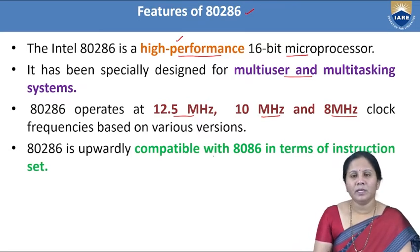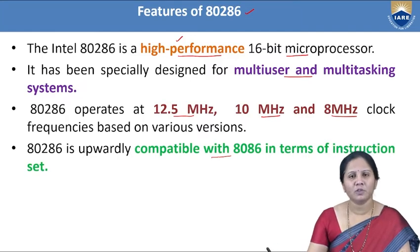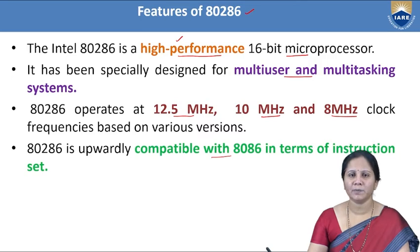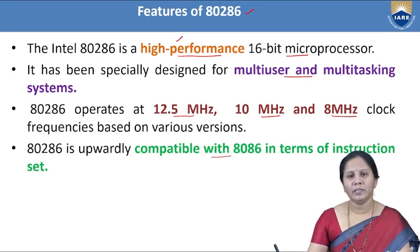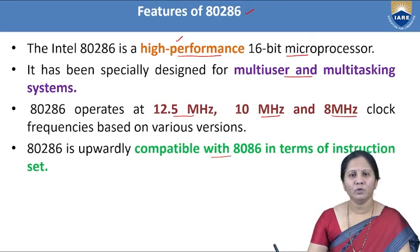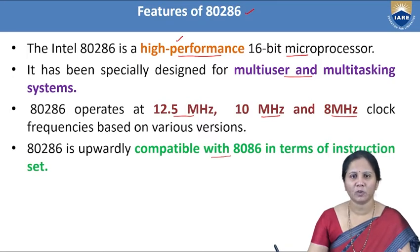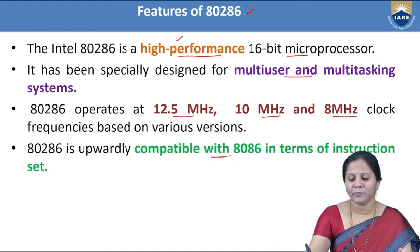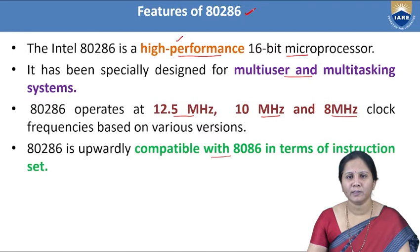The 80286 microprocessor is compatible with the 8086 in terms of instruction set. This means we can use the same instruction set as the 8086 to write assembly level language programs for the 80286 microprocessor as well.